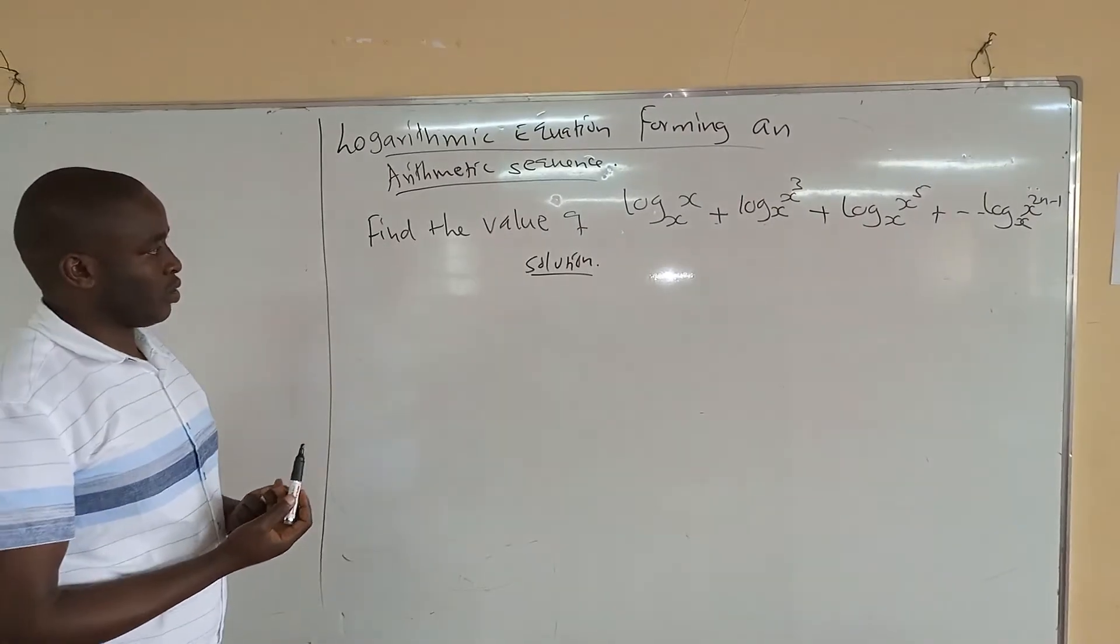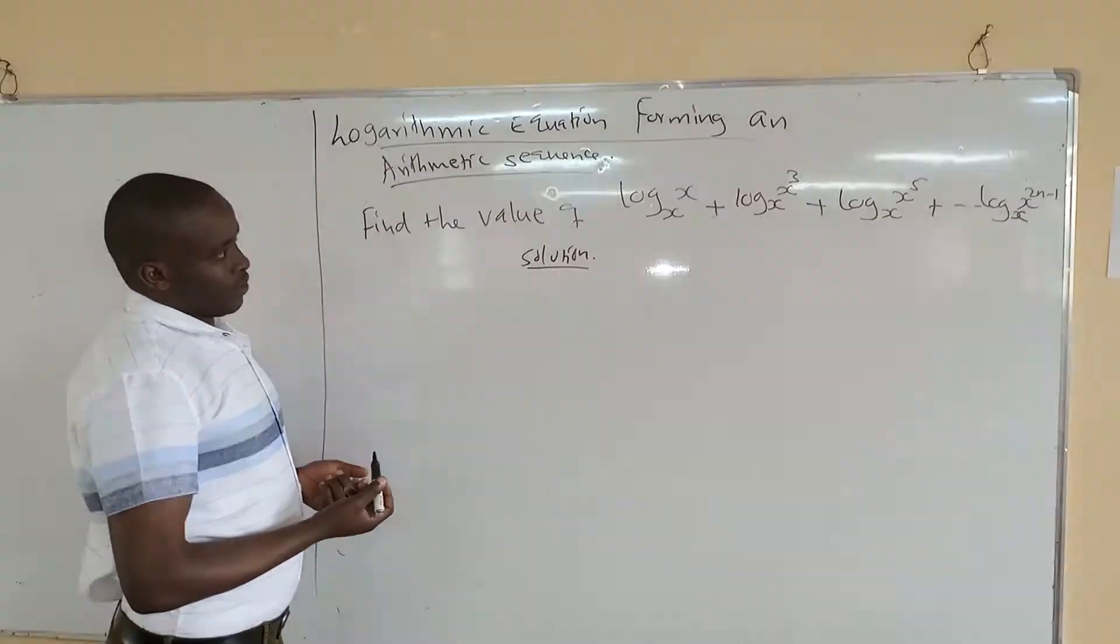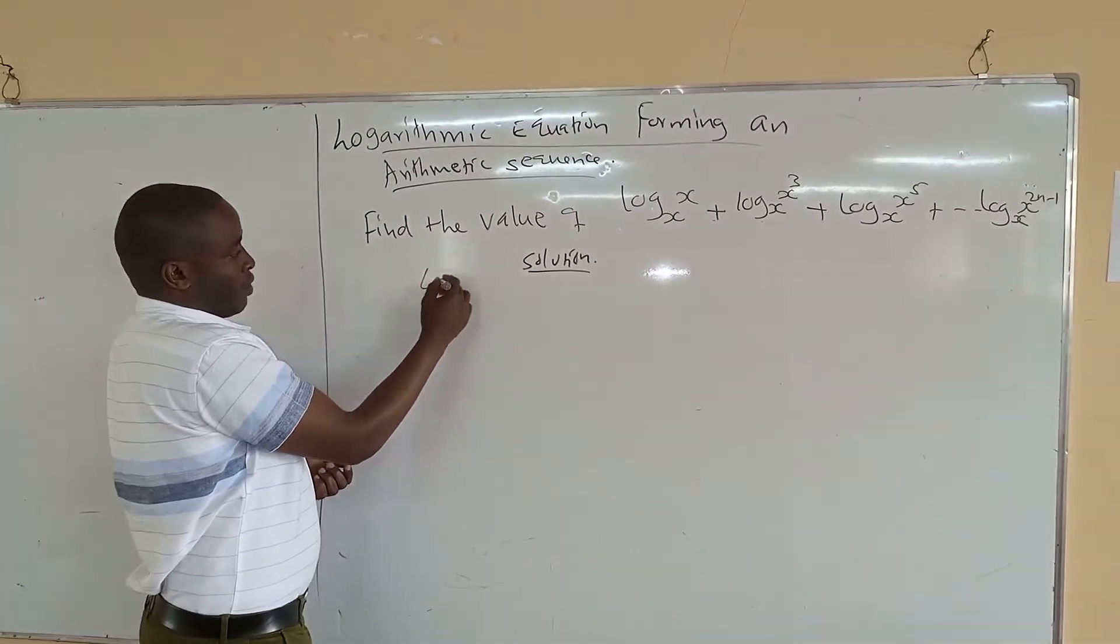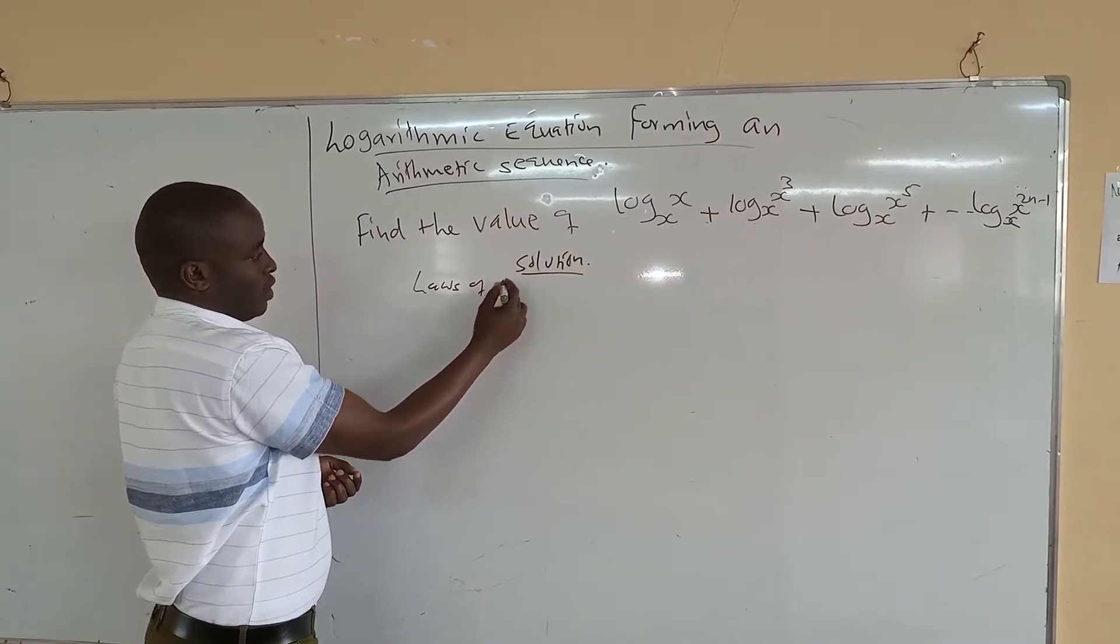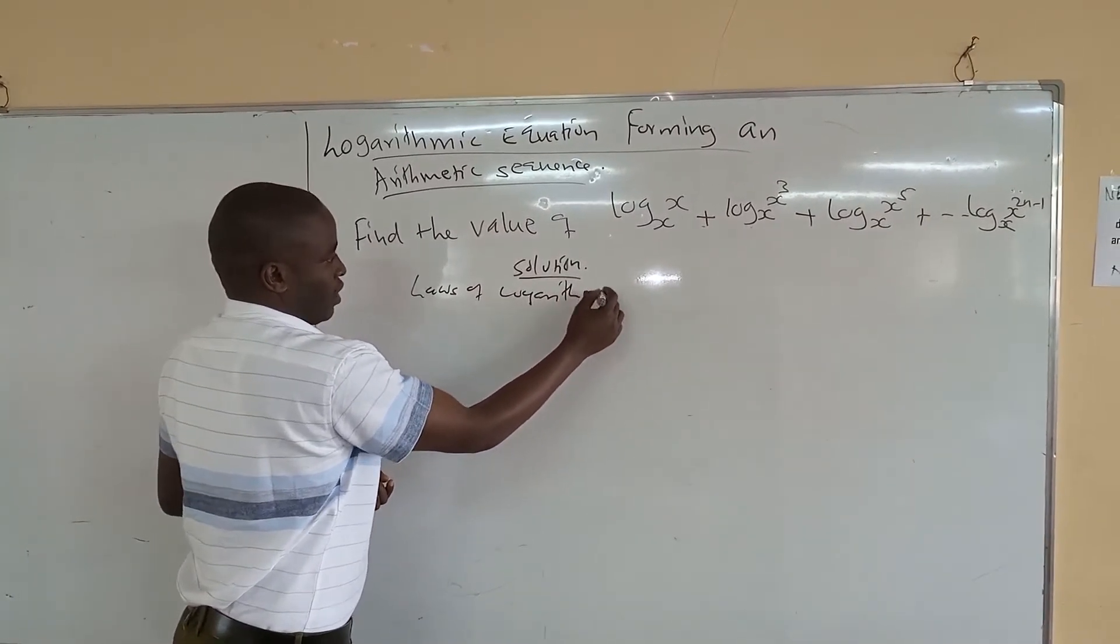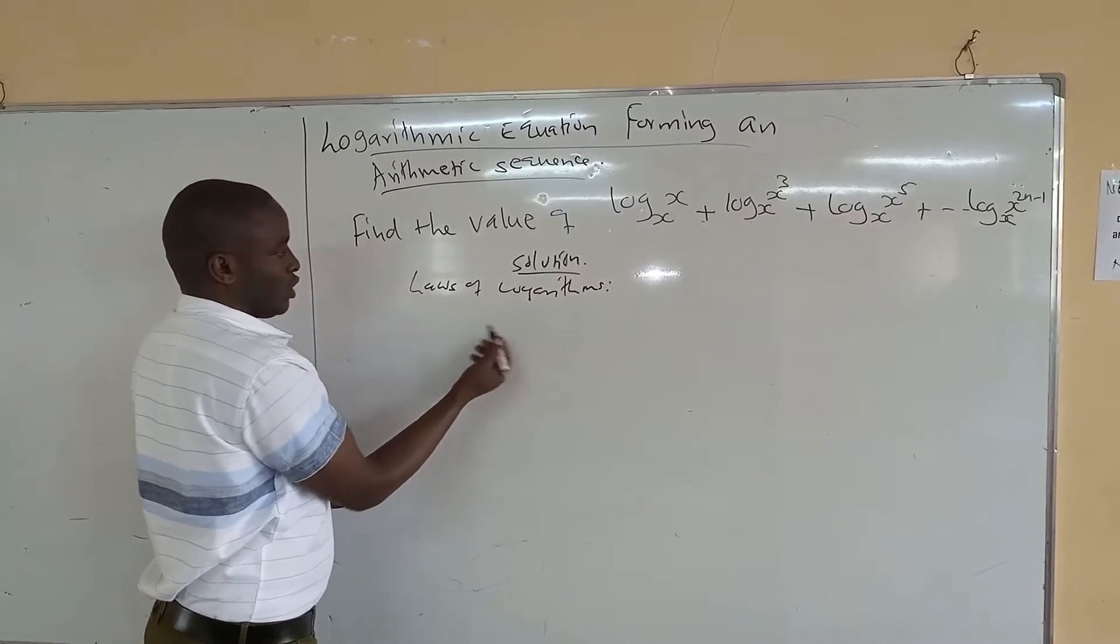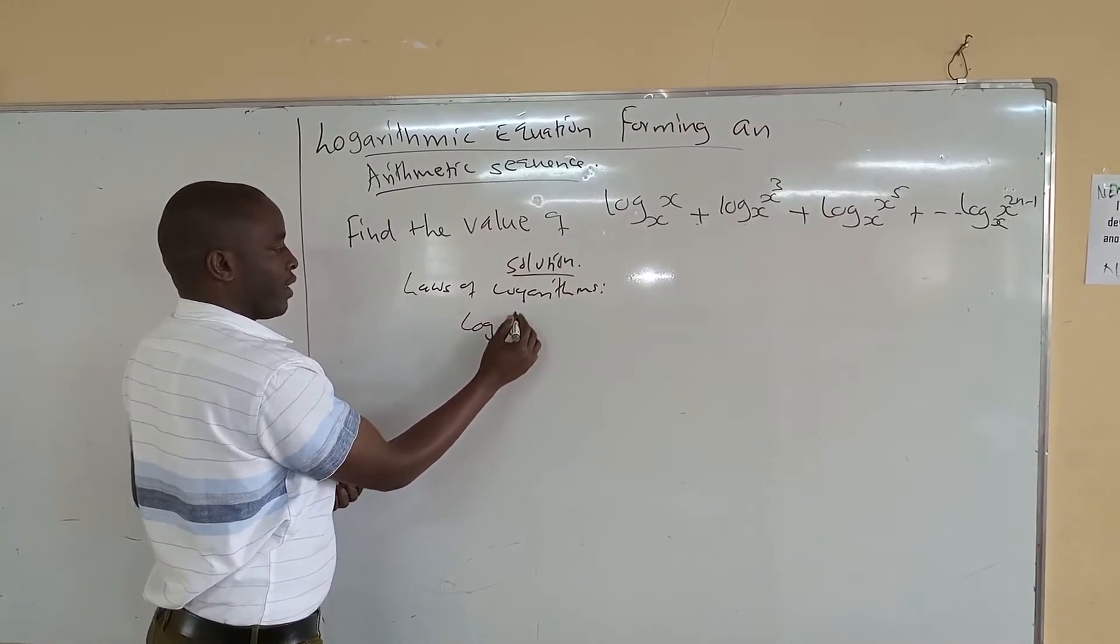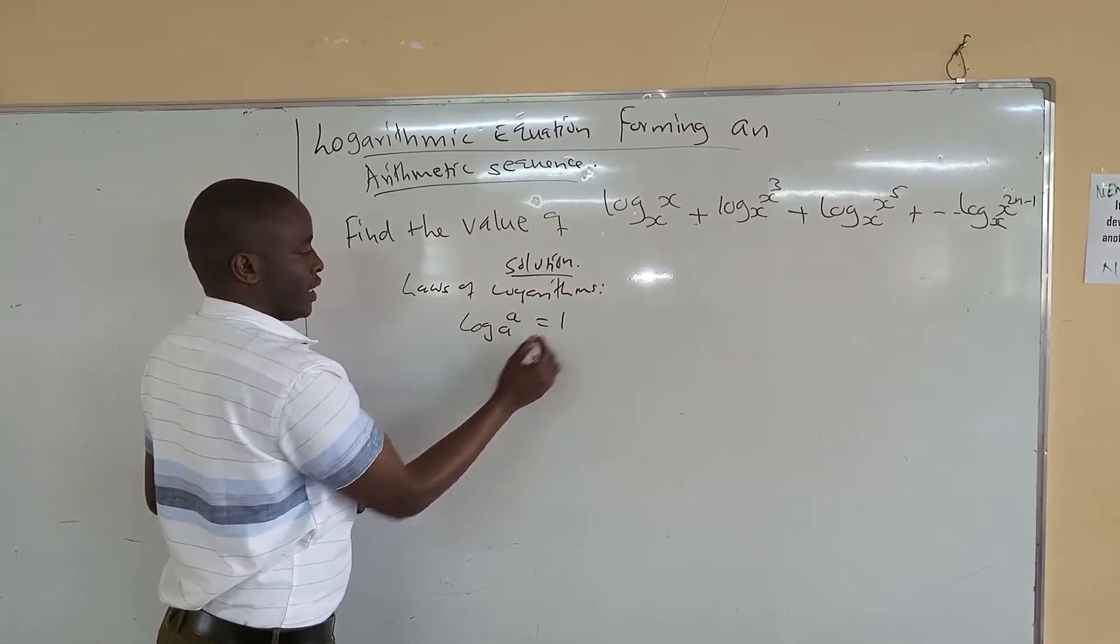We don't know the number of times. So first of all we need to know that in logarithmic, we talked about the laws of logarithmic. The laws of logarithmic, there are so many of them, but there is one in the trial where we said that log of a to a is the same as 1.